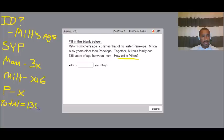So what this is doing, Anthony, is inviting us to set up an equation. So we're just going to put the mom, Milton, and Penelope and set it equal to 136 because we know that all of their ages together equals 136.